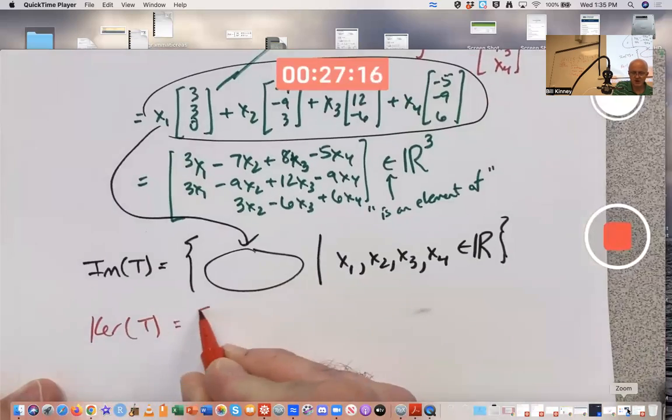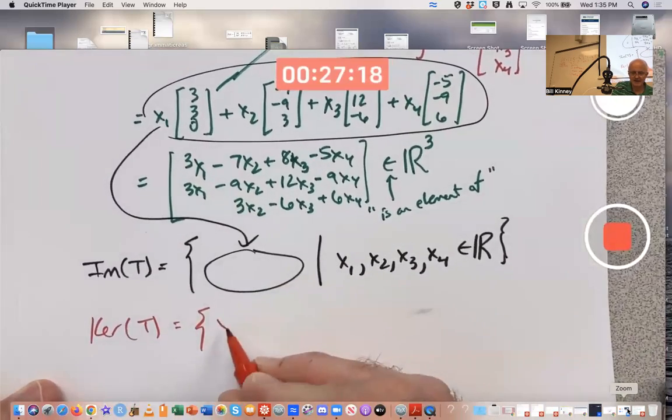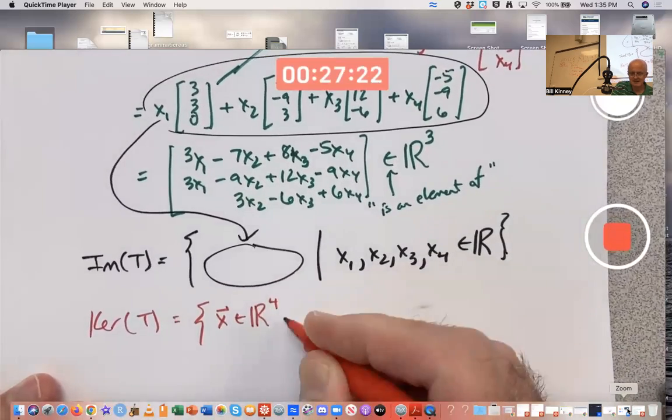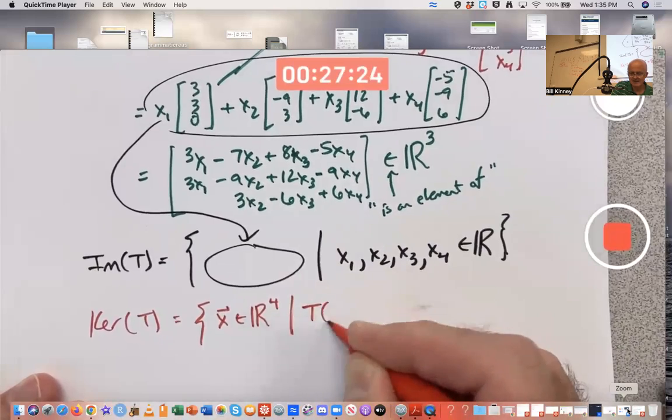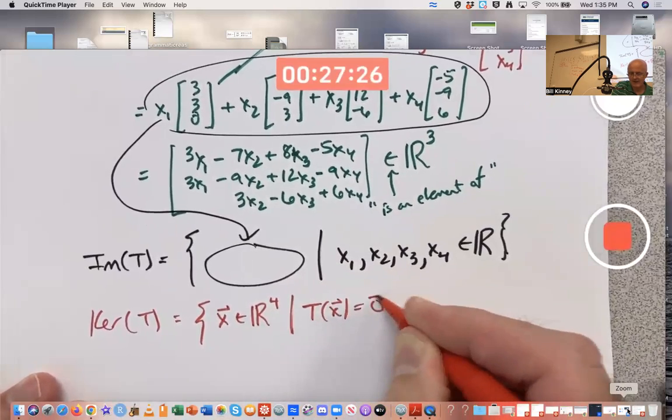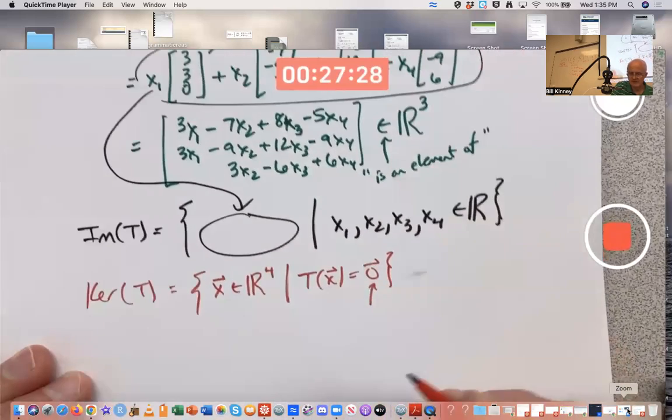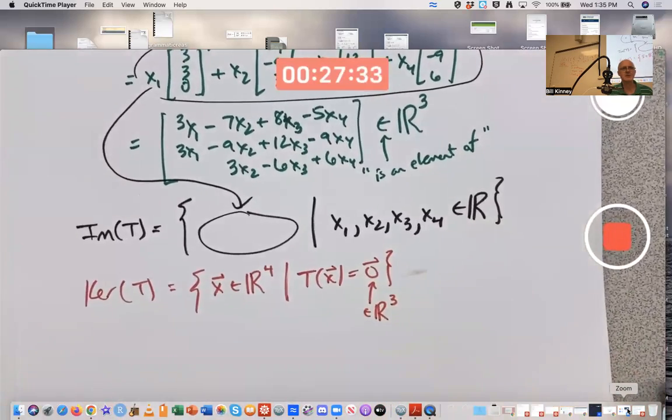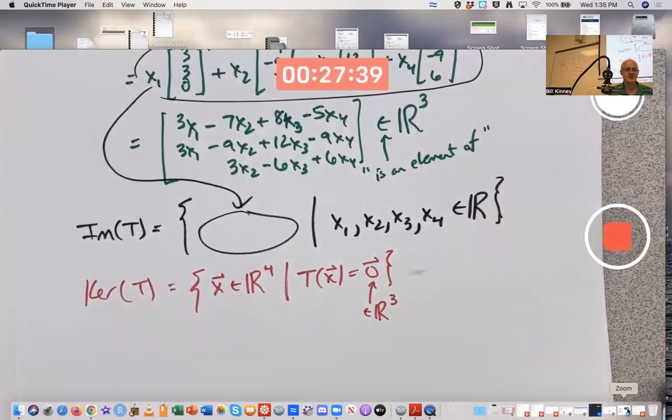What about the kernel? First of all, by definition, the kernel is the set of all elements in the domain, which is four-dimensional space, such that T(x) is zero, and that's the three-dimensional zero vector in R3. The vertical lines in the set builder notation just mean such that, or with the property—shorthand notation.